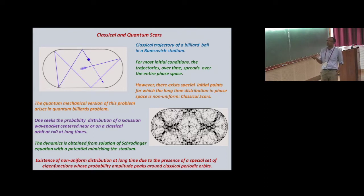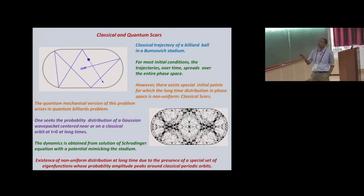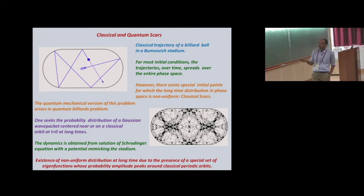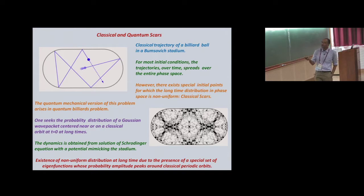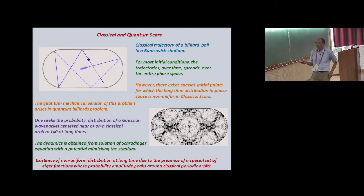This can be generalized to a quantum mechanical context. The quantum mechanical version arises in a quantum billiard problem where you use the Bunimovich Stadium as the potential and compute the probability distribution of a Gaussian wave packet centered around the classical trajectories. If you look at the long-time probability distribution you see scar-like patterns — there could be a non-uniform distribution at long times due to a special set of eigenfunctions in the Hamiltonian, and the probability amplitude of those eigenfunctions peaks around the classical periodic orbits. Those are scars in quantum mechanics.